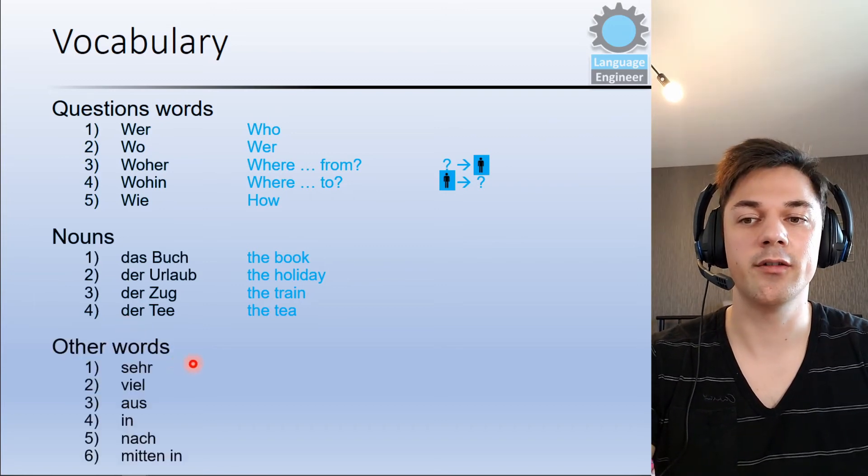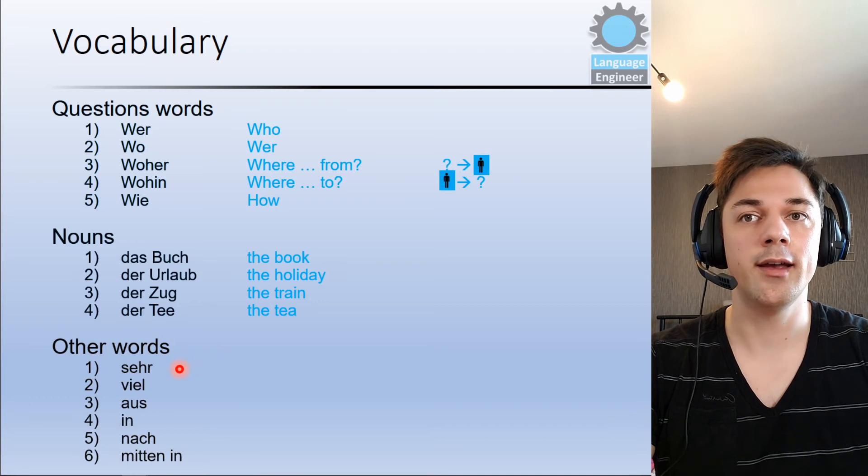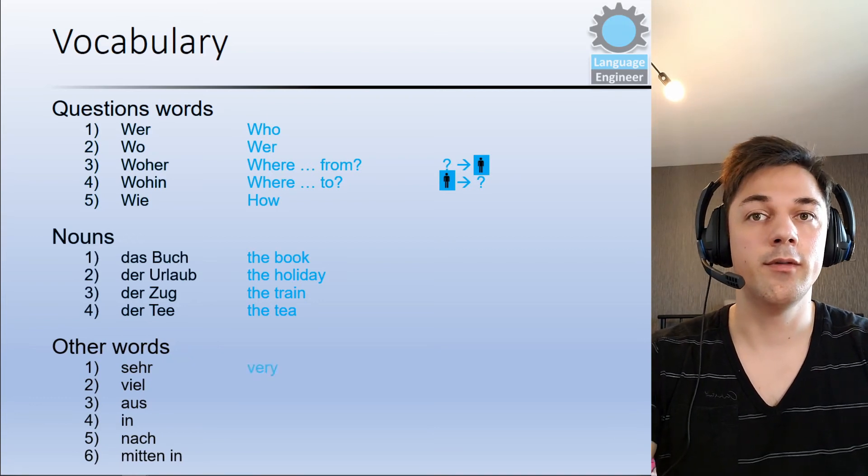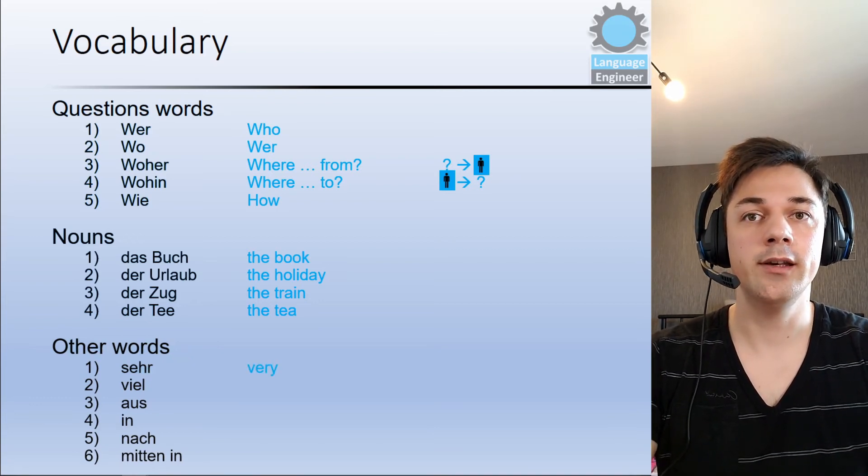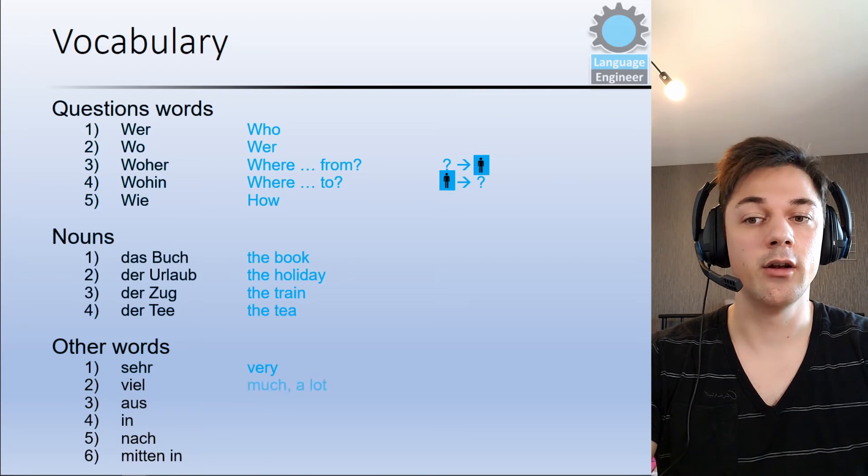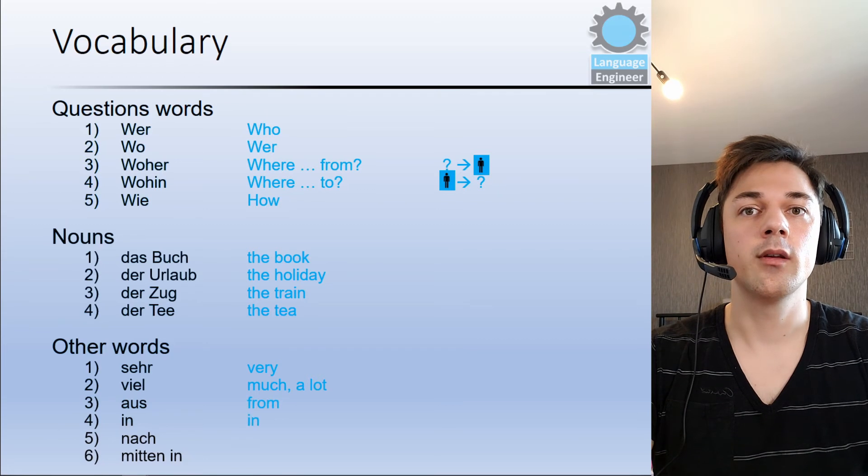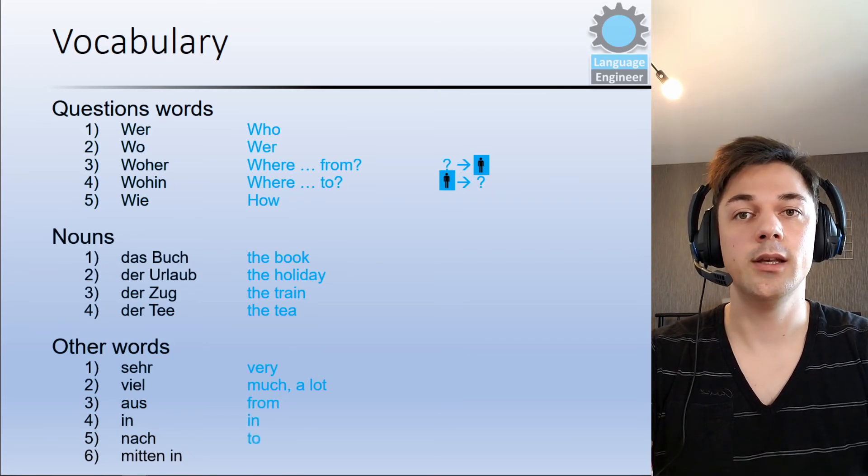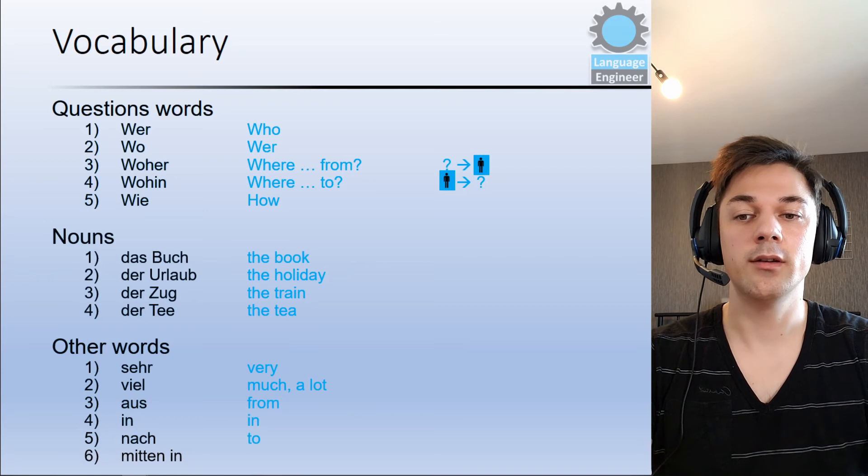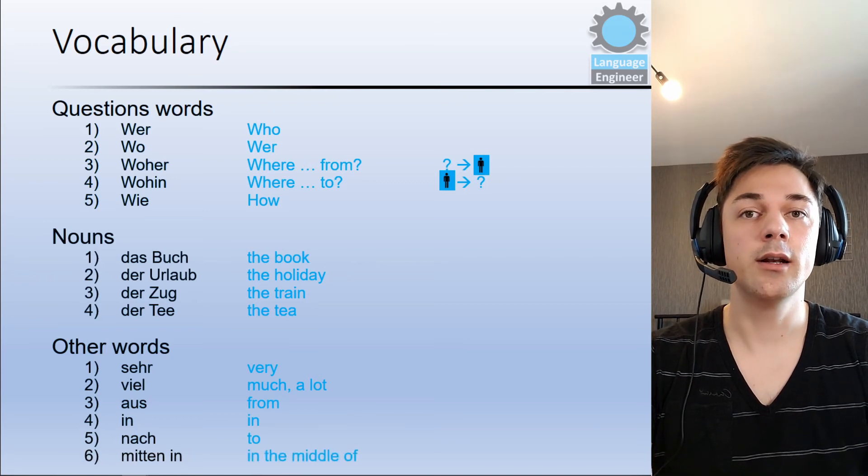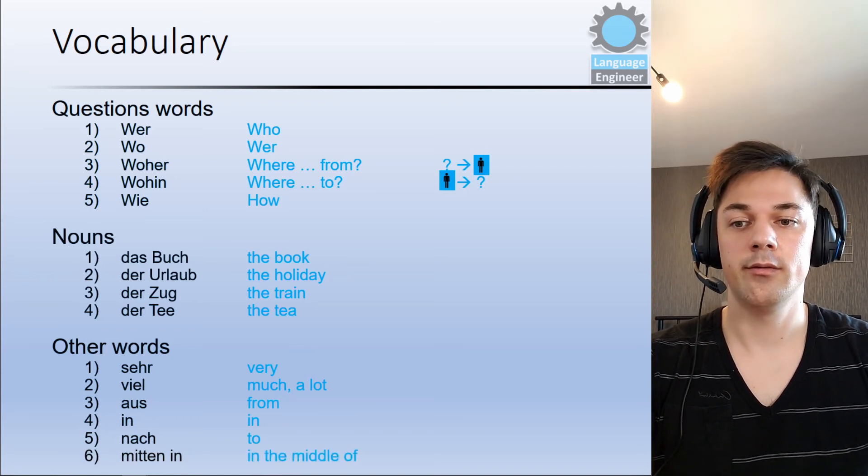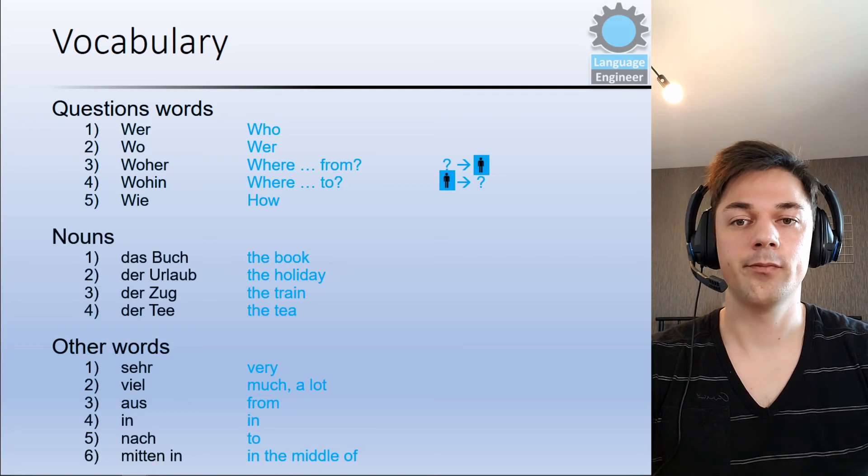And then we have also some other words. For example, sehr, this means very. Then we have viel. Viel means a lot or much. Aus means from. In means in. Nach means to. Mitten in means in the middle of.